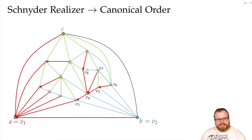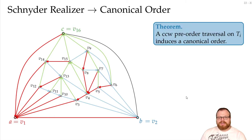So we walk around this tree with a pre-order traversal, and we assign the numbers according to this traversal. And if we do that, then we have a canonical order.